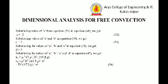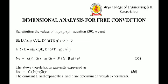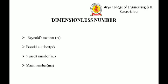We have now calculated pi 1, pi 2, and pi 3. Substituting their values into equation 30 and setting the function equal to zero, we get the Nusselt number Nu as a function of the Prandtl number and the Grashof number. The correlation is generally expressed as Nu = C · Pr^a · Gr^b, where the constant C and exponents a and b are determined through experiments.